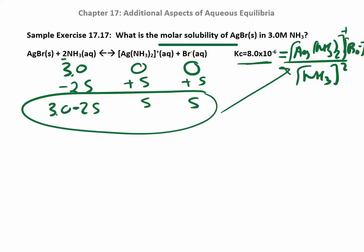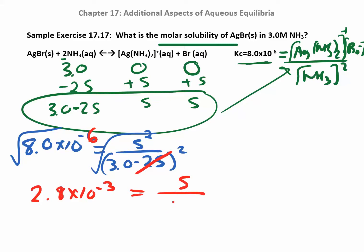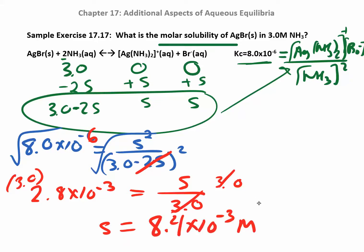The combined Kc is 8.0×10⁻⁶. Plugging in: 8.0×10⁻⁶ = s² / (3.0 − 2s)². Take the square root of both sides: 2.8×10⁻³ = s / 3.0. Since this K is on the order of 10⁻⁶, s will be small, so I can ignore the 2s term in the denominator. Multiply both sides by 3.0, and s = 8.4×10⁻³ M. That is the molar solubility.